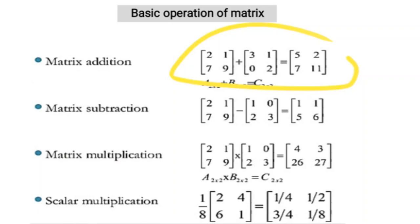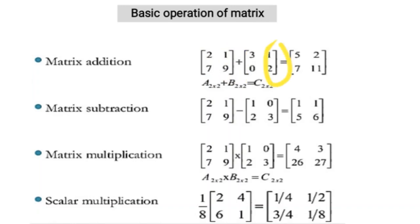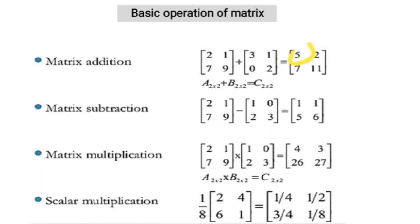In matrix addition, the given matrix is a 2×2 square matrix: [2, 1; 7, 9] and [3, 0; 1, 2]. To add them, simply add corresponding elements. The first element of the first row of the first matrix is added to the first element of the first row of the second matrix: 2 plus 3 equals 5.